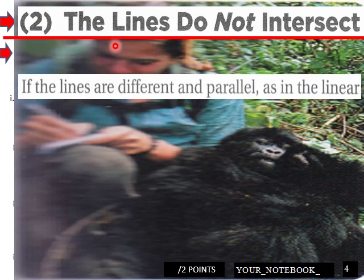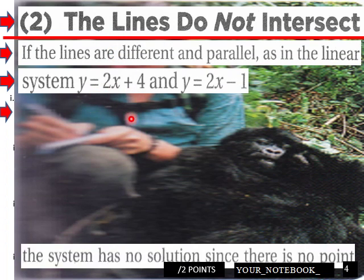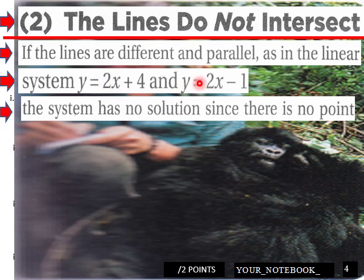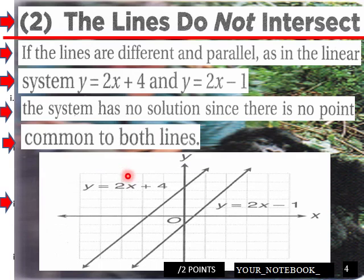And then the lines, if the lines do not intersect, as in a linear system here, because they both had the same slope, the system has no solution, since there is no point common to both lines. Like here, here's an example of a linear system with no solution.